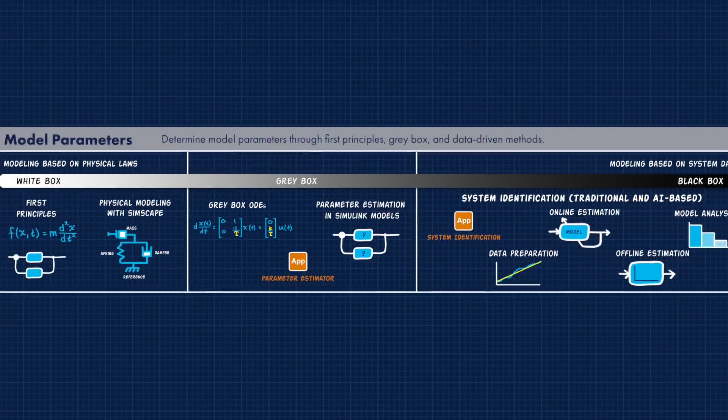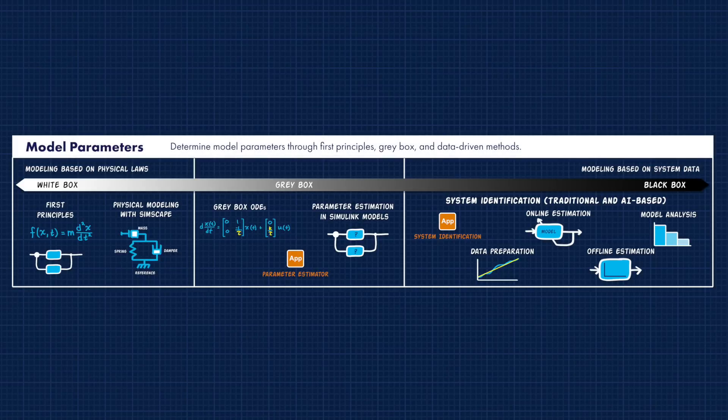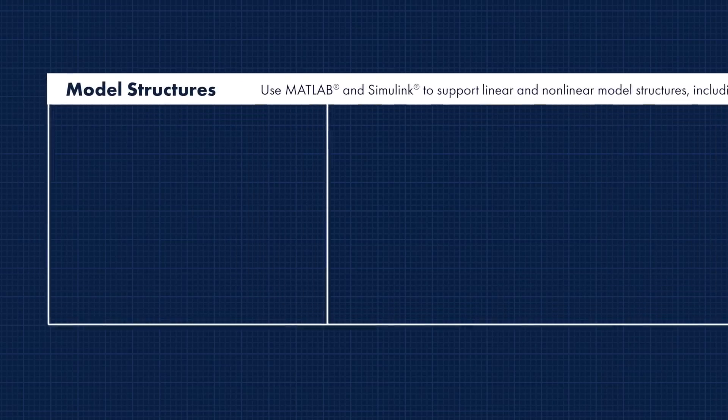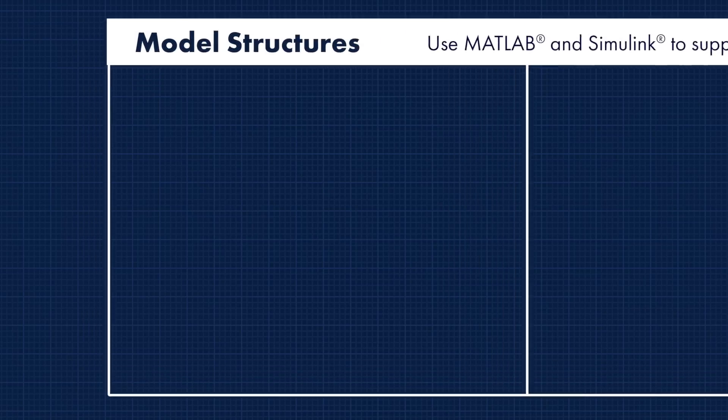Estimating model parameters is just half of the modeling story. The other half is choosing a model structure. In what mathematical format do you want to capture the dynamics of your system? Not only does the model structure need to be able to capture the dynamics, but it also has to be a structure that is right for the scenario under which you're going to use the model.